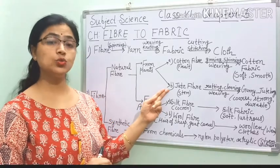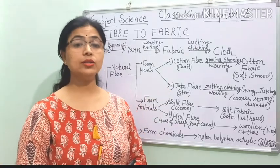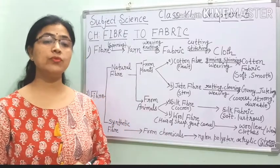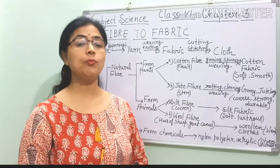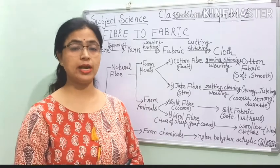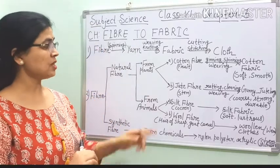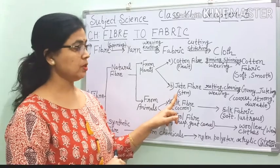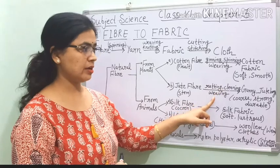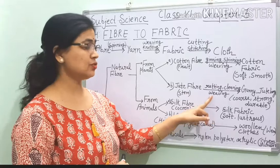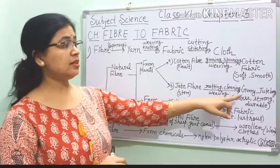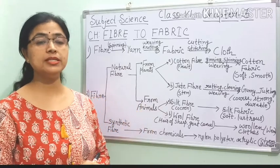The second one is jute fibre. You all have seen rope at home and foot mats — these are made of jute. Gunny bags and jute bags. This time people are very environment friendly; we are using jute bags instead of polythene bags. Jute fibre comes from the stem of the plant, through the process of retting, cleaning, and weaving. Jute is very coarse, strong, and durable.